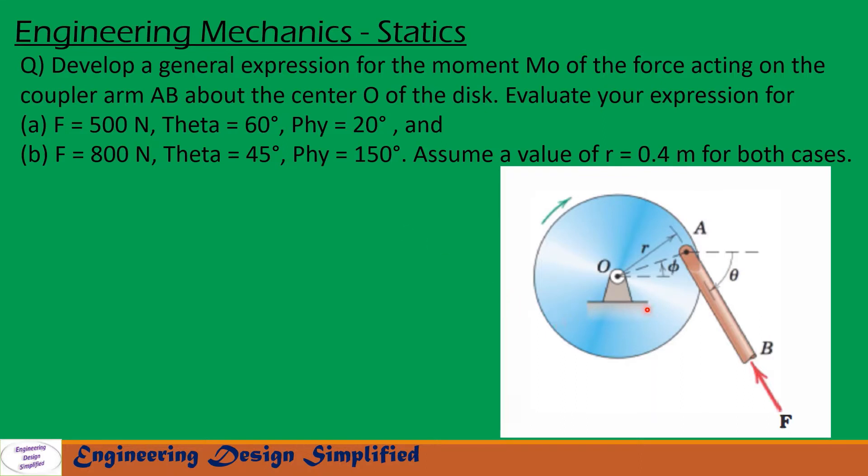In this problem, given is a disc and a coupler arm attached like shown here. The distance between O and A will be r, and a force F is acting along this coupler link AB. This angle is theta - the angle between the coupler link and horizontal. This angle here is phi, the angle between the line connecting O and A and horizontal.